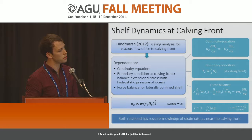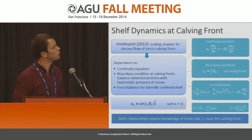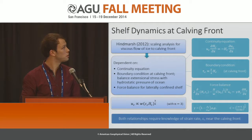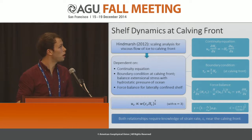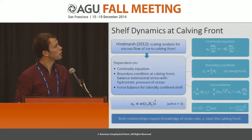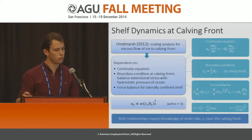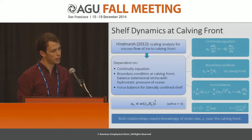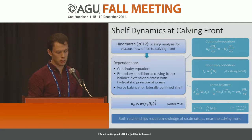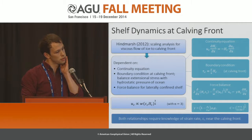However, in 2012, Hindmarsh argued that this relationship was in fact due to the viscous supply of ice to the calving front, and could show that there was a relationship of this nature using a scaling analysis. The scaling analysis had three components.